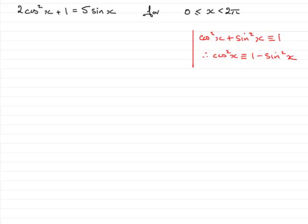So what we can do is in our equation, wherever we see the cos²x, just replace it with 1 - sin²x. So that's where we start then by doing that. We'll just replace that with 1 - sin²x plus the 1 equals 5sinx. Now we can expand the bracket and so therefore we get 2 - 2sin²x + 1 = 5sinx.